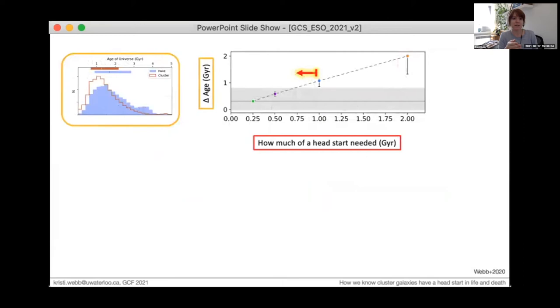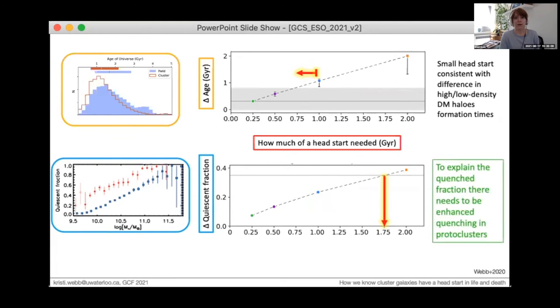And this is interesting because a small head start would match predictions for the difference in collapse times between high and low density dark matter halos. If we fold in the stellar mass function information, on the other hand, this requires a much larger head start. There would need to be strongly enhanced quenching in clusters to explain this. Not only would you need a head start, you need enhanced quenching in proto-clusters. While our toy model is too simplistic to reconcile these two observations, it does suggest that there's something happening in proto-clusters to kickstart galaxy quenching.